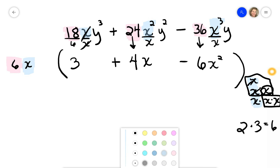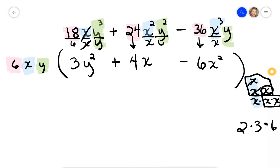And last but not least, I've got my y's. I got a y cubed, a y squared, and a y, so the most you can pull out there is a y. y cubed divided by y is a y squared, y squared divided by y is just a y, and y divided by y cancels out.